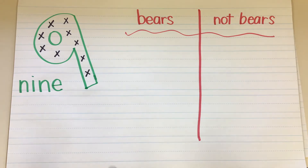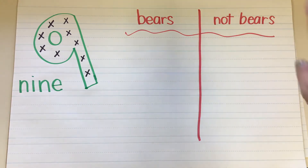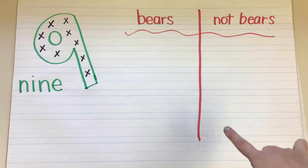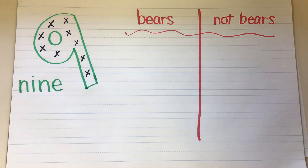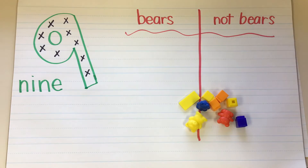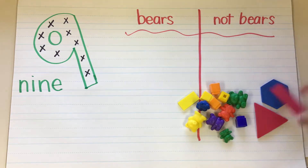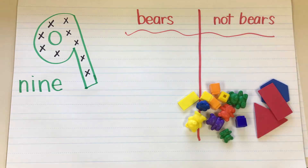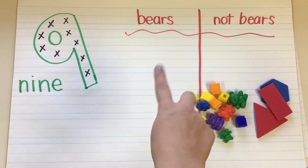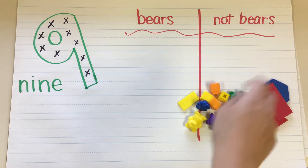Today we are going to sort by objects that are bears and objects that are not bears. I'm going to pick up some of my stuff right here and let's sort it to see where it goes. If it's a bear, we're going to put it on this side. If it's not a bear, we're going to put it over here.